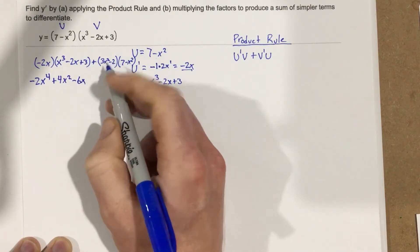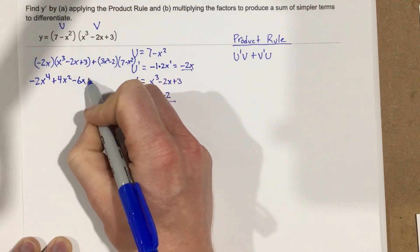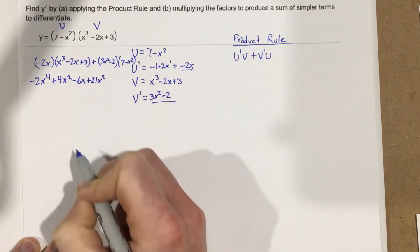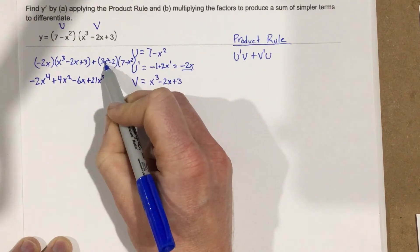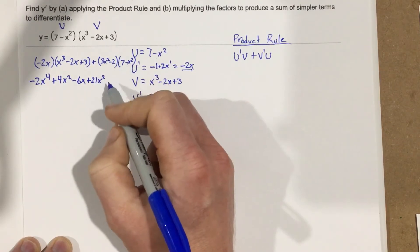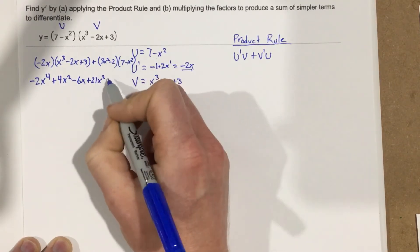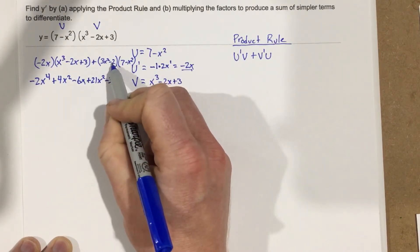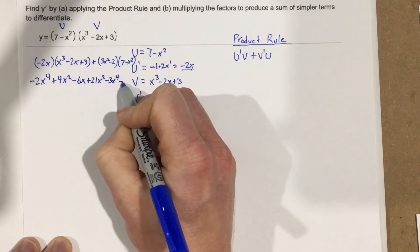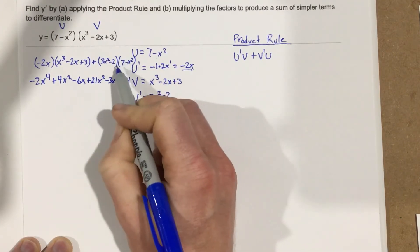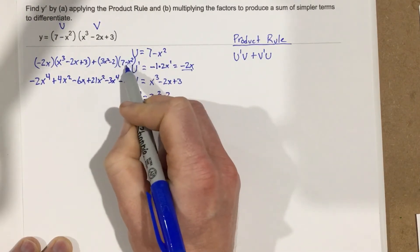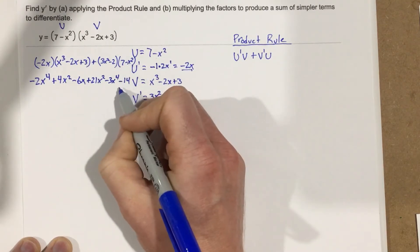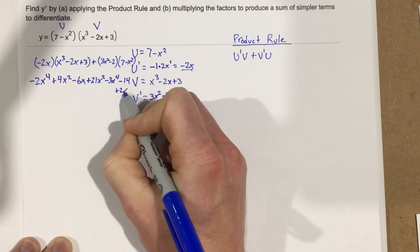Then we distribute the second part: 3x squared times 7 gives plus 21x squared. 3x squared times negative x squared gives negative 3x to the 4th. Negative 2 times 7 is negative 14. And negative 2 times negative x squared is positive 2x squared.